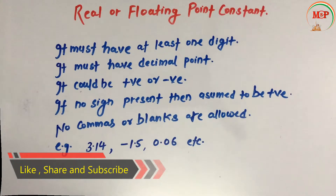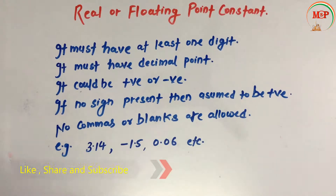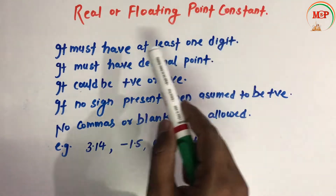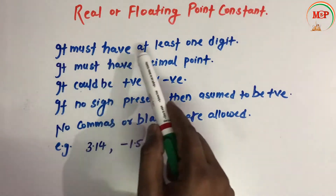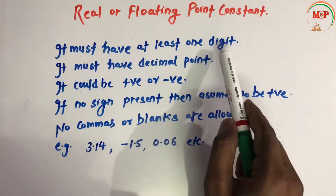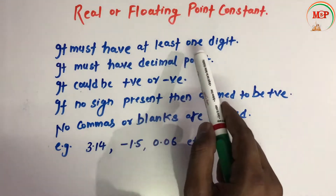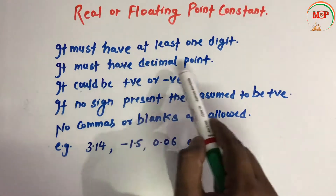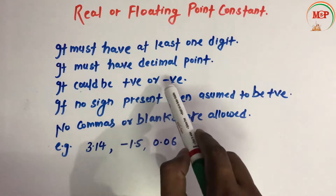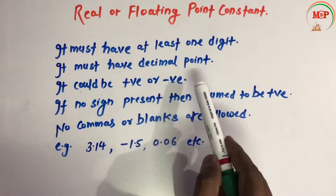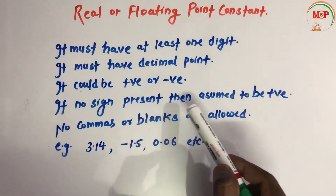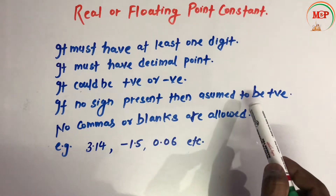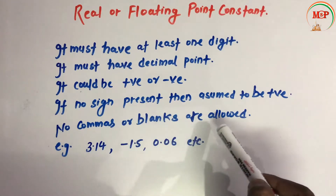Now the next one is real or floating point constant. It must have at least one digit. It must have a decimal point. It could be either positive or negative. If no sign is present, assume it to be positive. No commas or blanks are allowed.